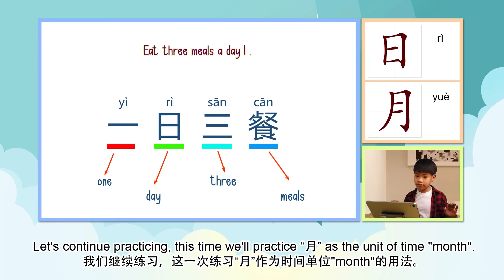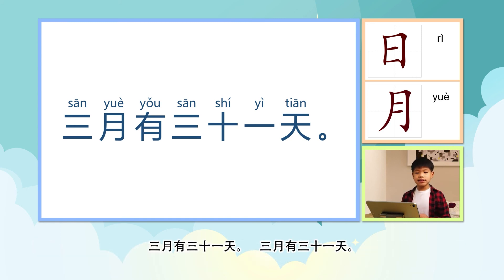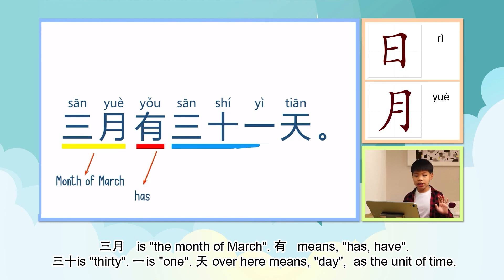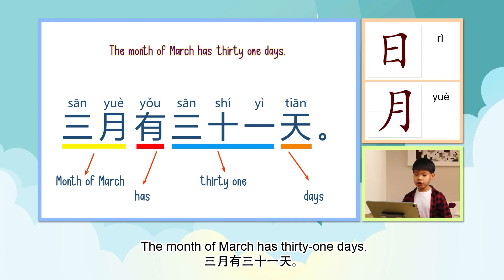Let's continue practicing. This time we'll practice 月 as the unit of time: month. 三月有三十一天。 三月 is the month of March. 有 means has or have. 三十 is thirty. 一 is one — we learned that in episode number one. 天 over here means day as the unit of time. The month of March has 31 days.